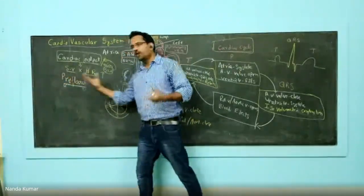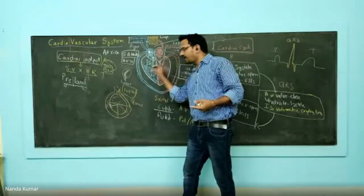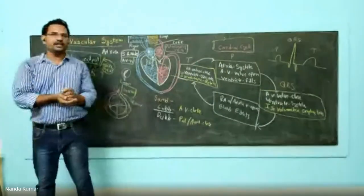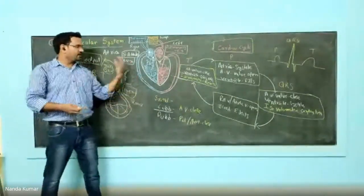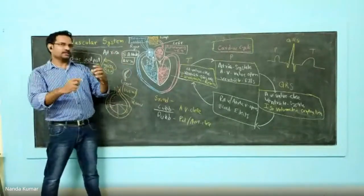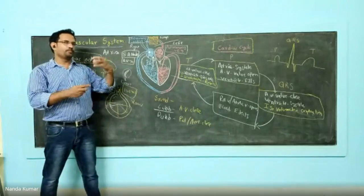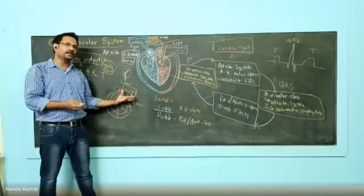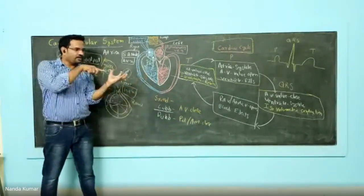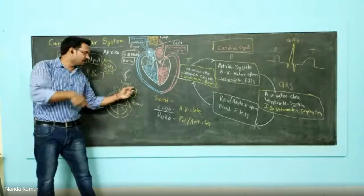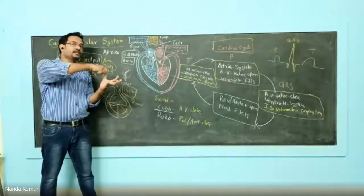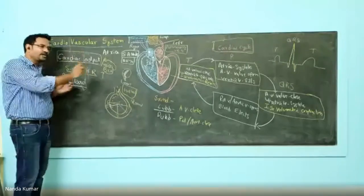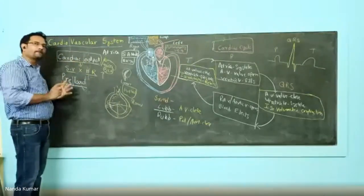Pre means before contraction; load means what load the heart is bearing — the pressure put on the ventricle wall. Contraction and relaxation is a continuous cyclic thing. So before contraction, you have relaxation. When ventricles are relaxed, you have 140 ml of blood, and that puts pressure on the ventricle wall. Instead of 140, if there is 200, the pressure increases. That pressure — the degree of stretch on the ventricle wall before contraction — is known as preload.